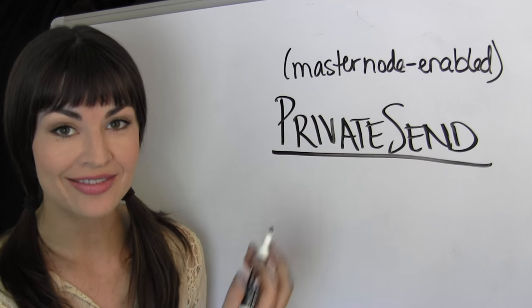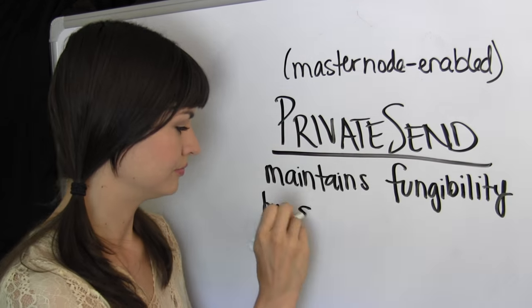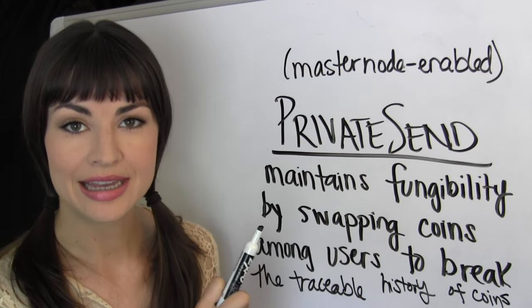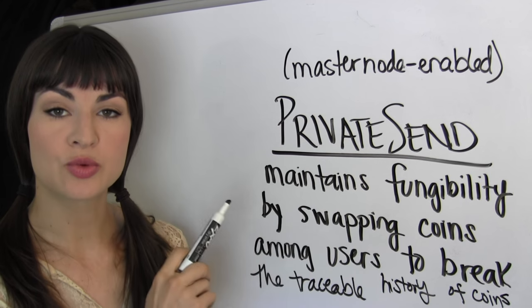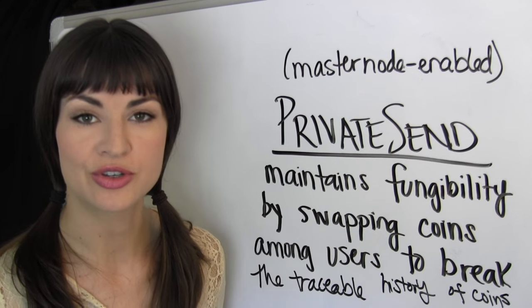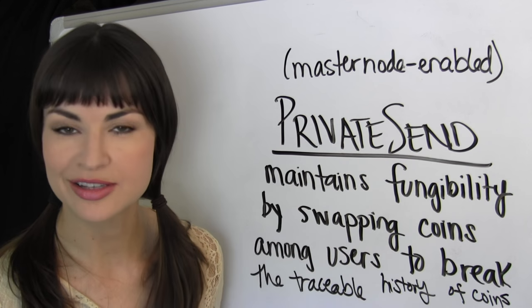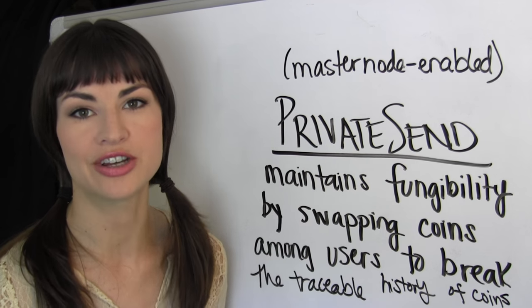Masternode enabled private send then maintains fungibility by swapping coins among users, which breaks the traceable history of coins on the blockchain.